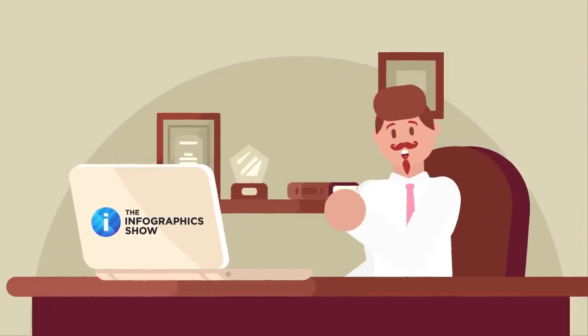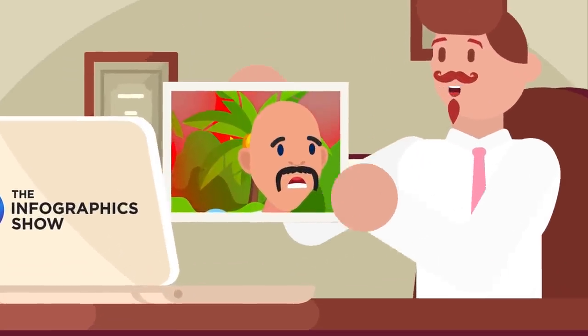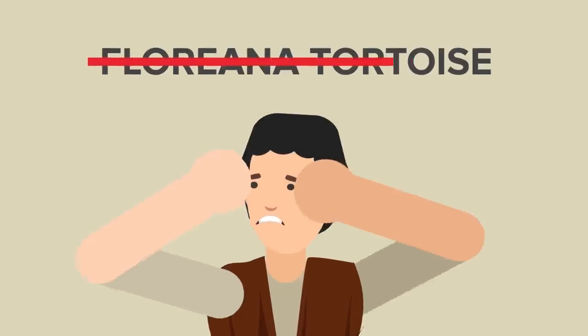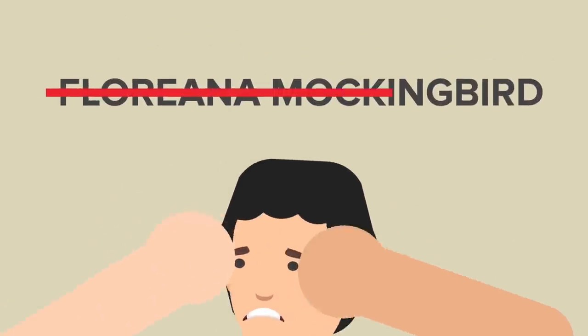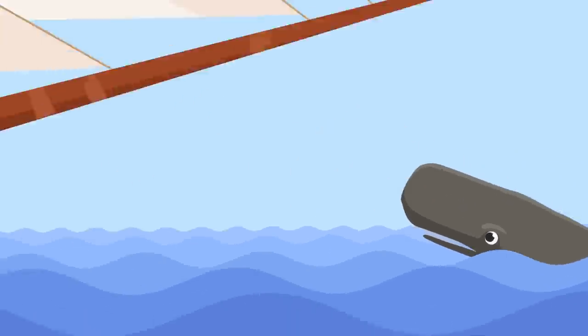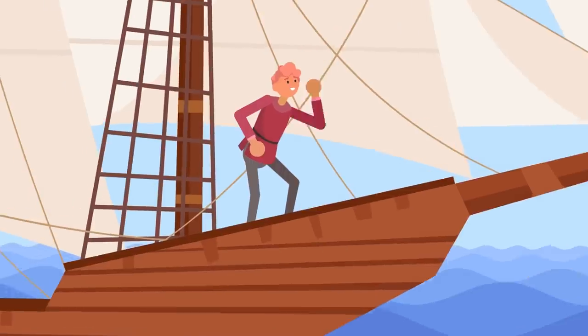Thankfully, no one in the crew is hurt, but the same can't be said for the island's wildlife. You're now responsible for the extinction of the Floriana Tortoise and the near-extinction of the Floriana Mockingbird. Finally, after more than a year at sea, your crew encounters a group of sperm whales. It looks like luck is finally in your favor, or so you think.